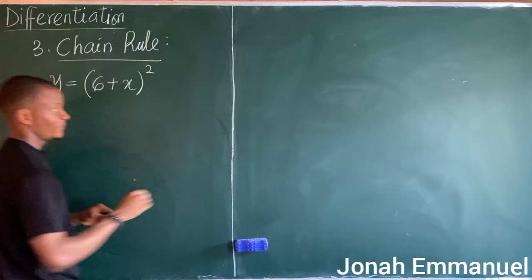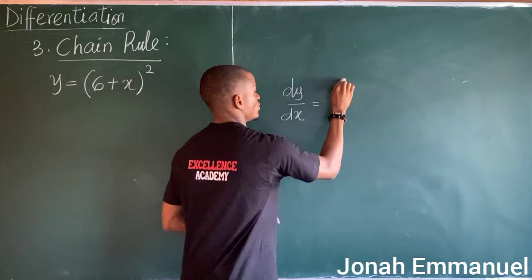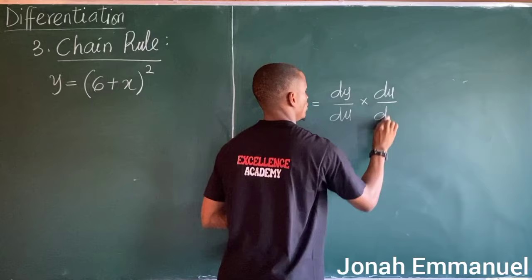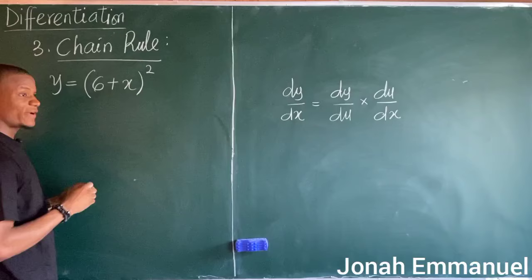So what's the concept behind chain rule? For chain rule, I have that dy/dx is equal to dy/du times du/dx.